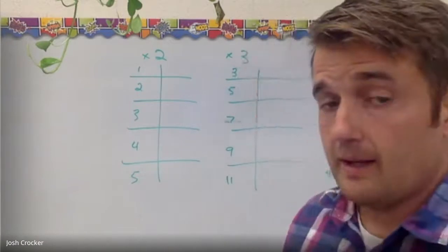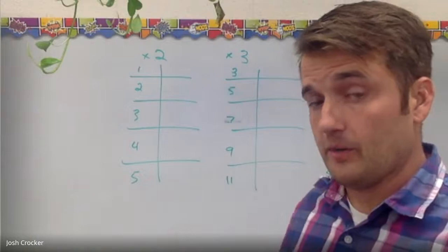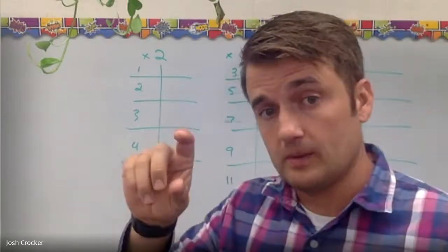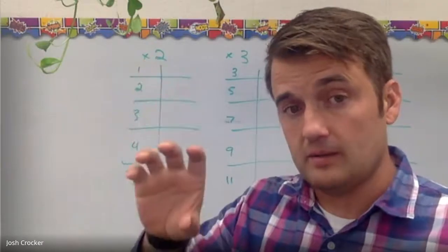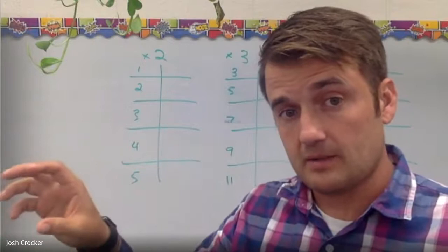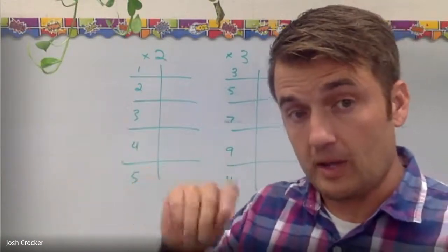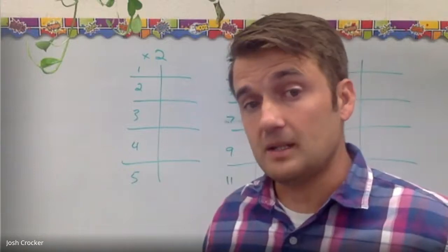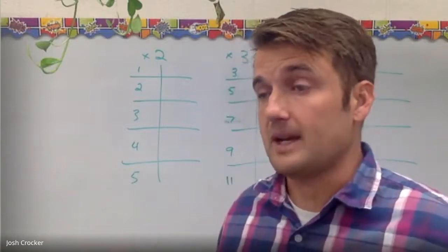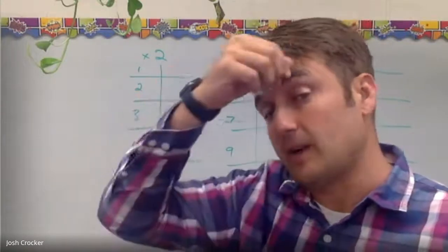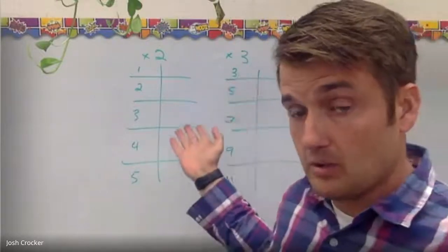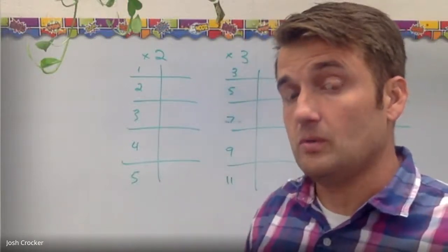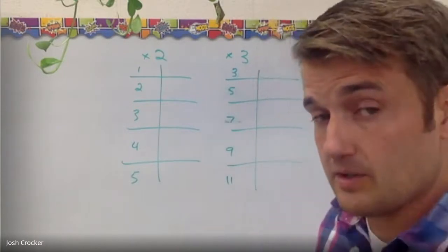They're really just the same thing and the last time we talked about function machines and input-output tables we talked about addition and subtraction. So today we're gonna go a step further. Since multiplication is just repeated addition it has the same effect but it has a bigger effect because it's repeating that addition. Instead of just adding 3 here I'm multiplying by 2 or multiplying by 3. So I thought it would be good to just go through a few function machines and show you applying a multiplication rule.